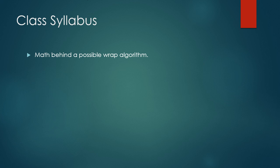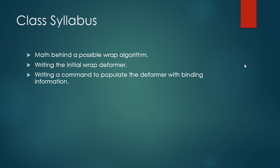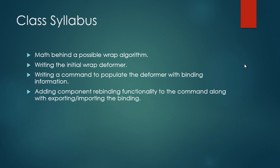In this class we'll begin by going over the math of a possible wrap algorithm. There isn't just one way to write a wrap deformer, so the math we'll cover isn't from any paper — it's just a quick and easy approach I found. Once we've learned the math, we'll write our initial wrap deformer prototype, and then we'll write a custom command to interface with that deformer — to initialize it, create it, and add functionality such as component rebinding, along with importing and exporting that binding.